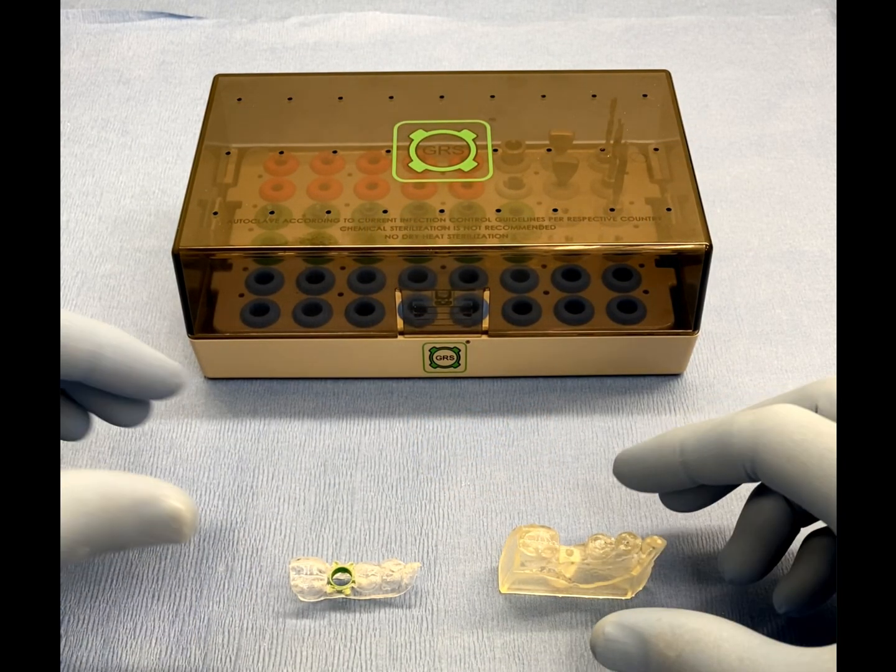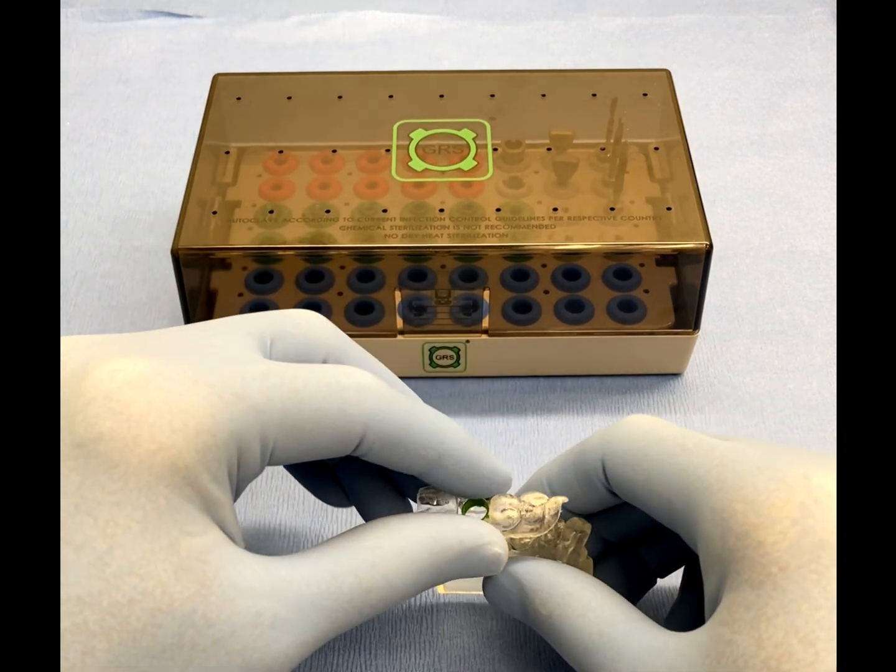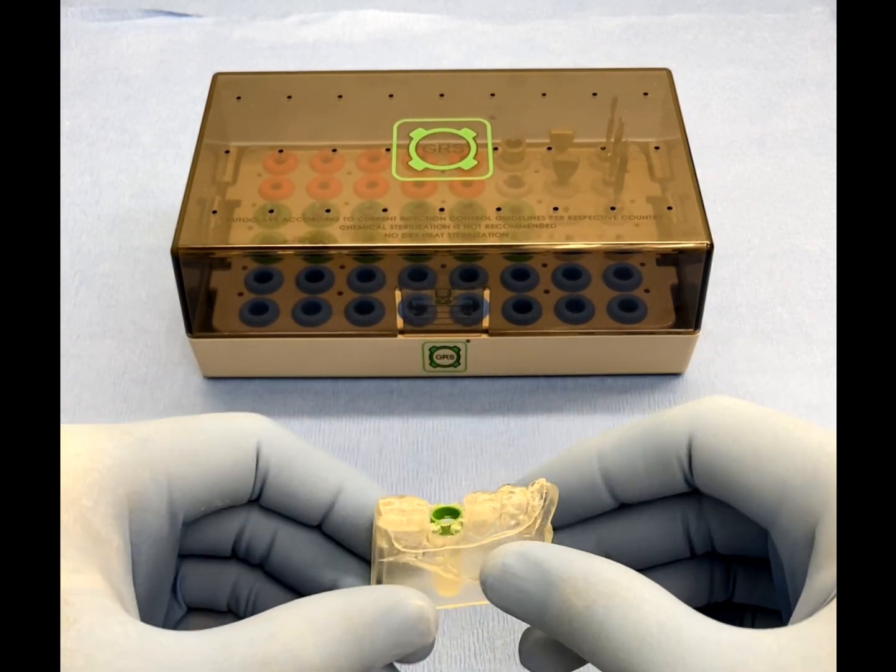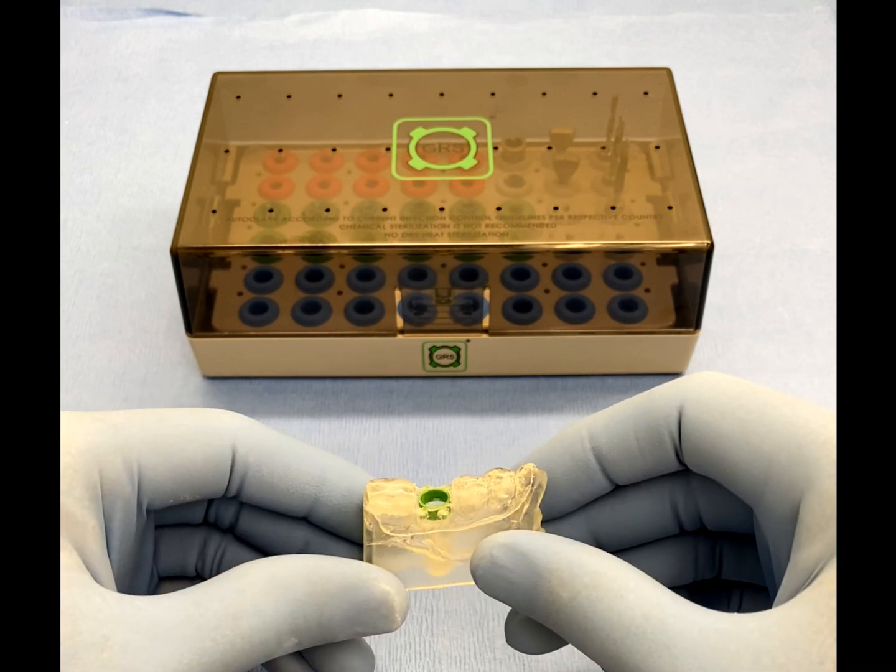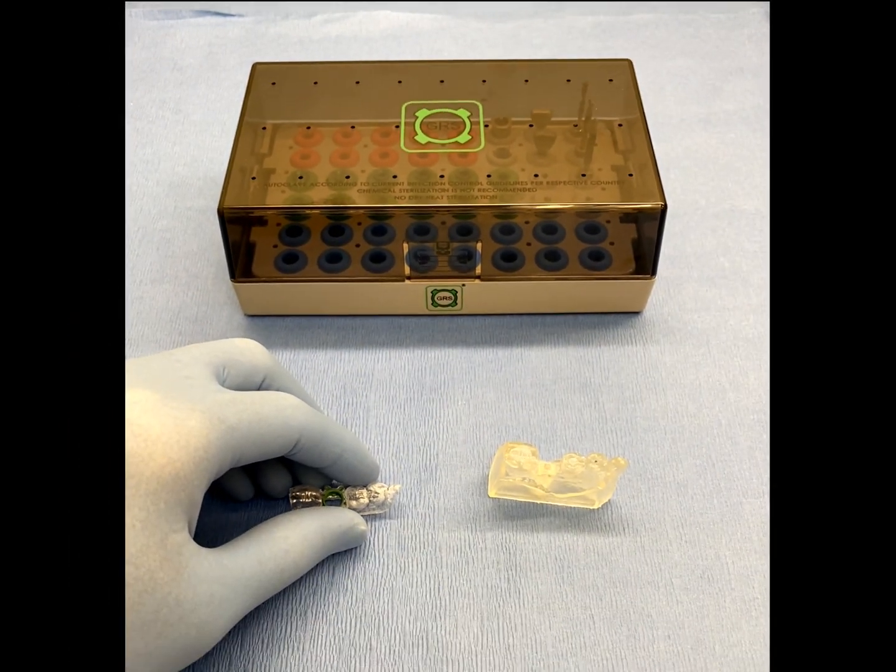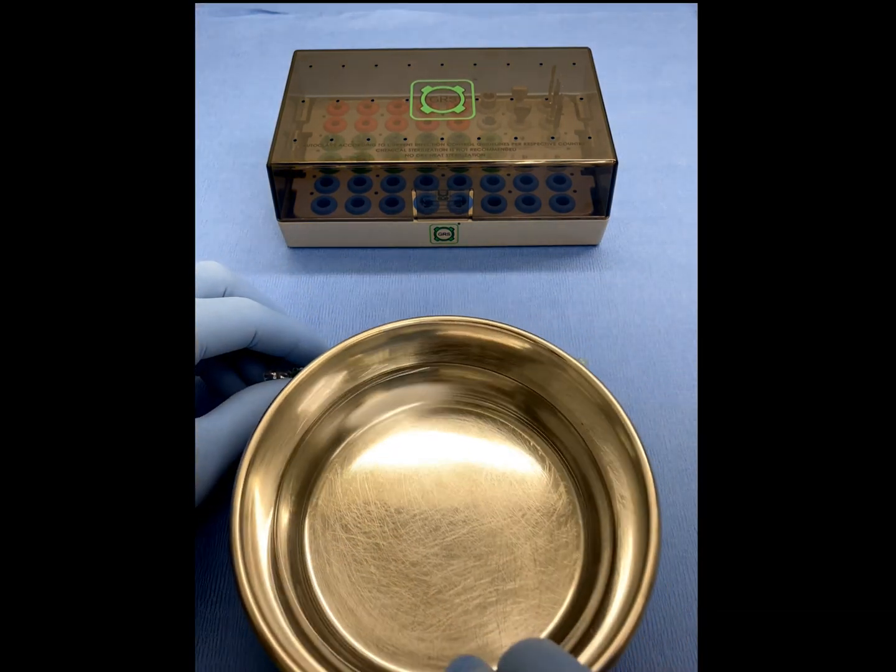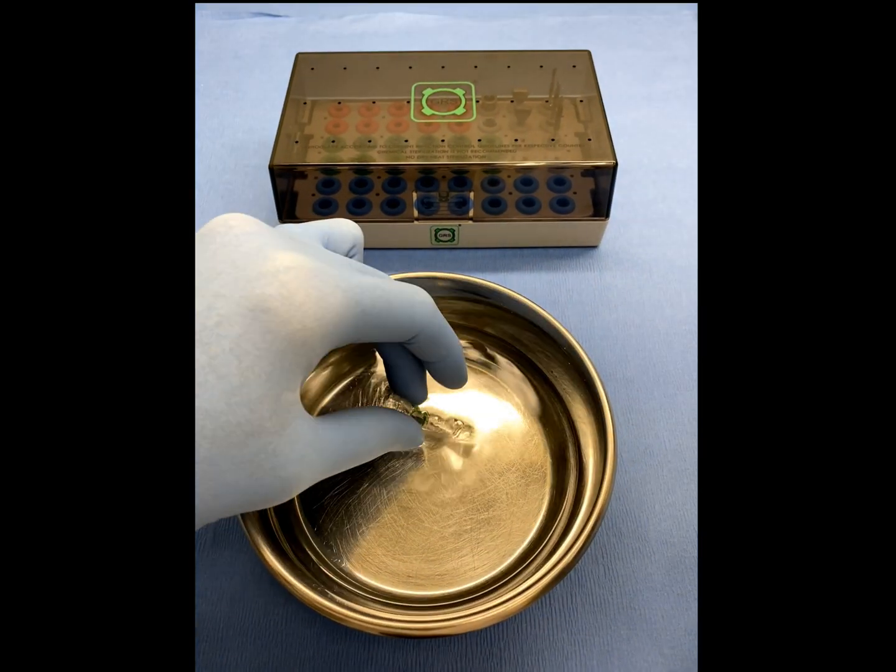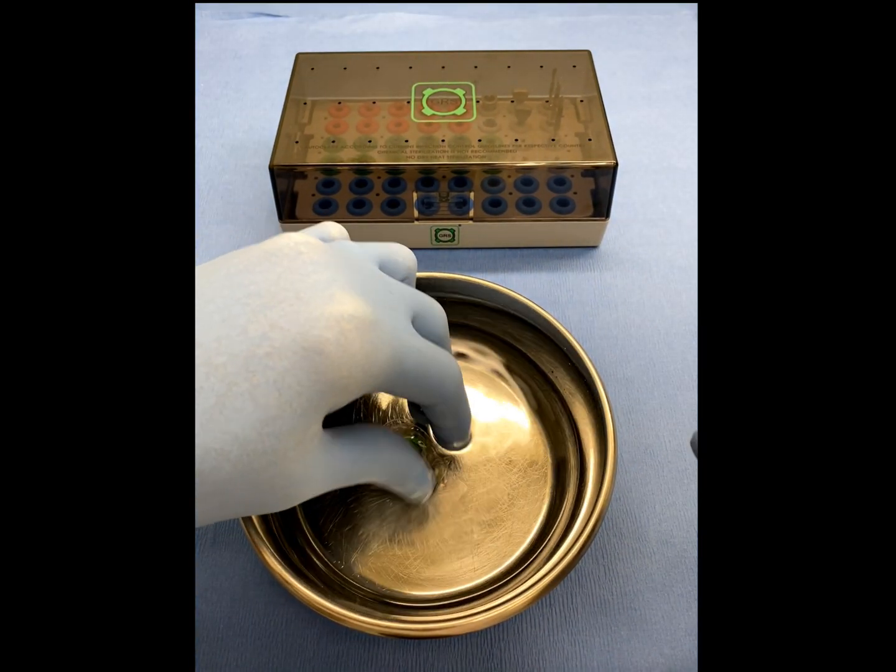Once the GRS surgical guide has been completely finished, place the guide back on the model to confirm fit and function. Then, remove the surgical guide and liberally wet the entire surgical guide with water and place back on the model.